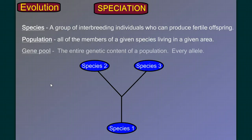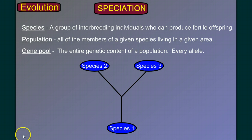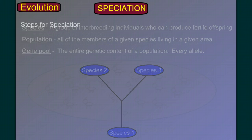And finally, gene pool: the entire genetic content of a population. That's another term we'll spend a lot more time on in the next video, but we need to have these terms now because we'll use them throughout this video. So — the steps of speciation.